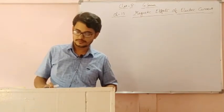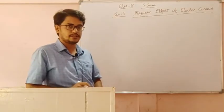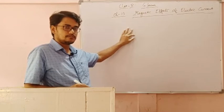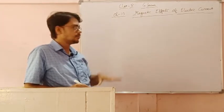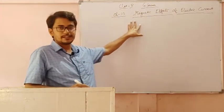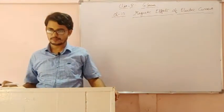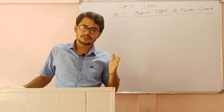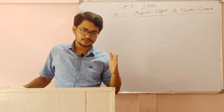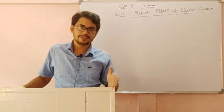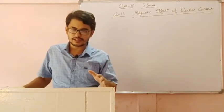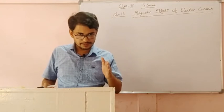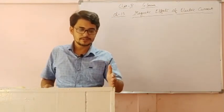Good morning students. We are going to discuss the rest of this chapter. In my earlier class, I discussed up to the motor, and after the motor, the rest of the part we will discuss now. This is Chapter 13: Magnetic Effects of Electric Current of Class 10 General Science. We have seen that a current-carrying conductor behaves like a magnet — due to current, magnetic properties are attained by that conductor. Due to current, magnetic field is created.